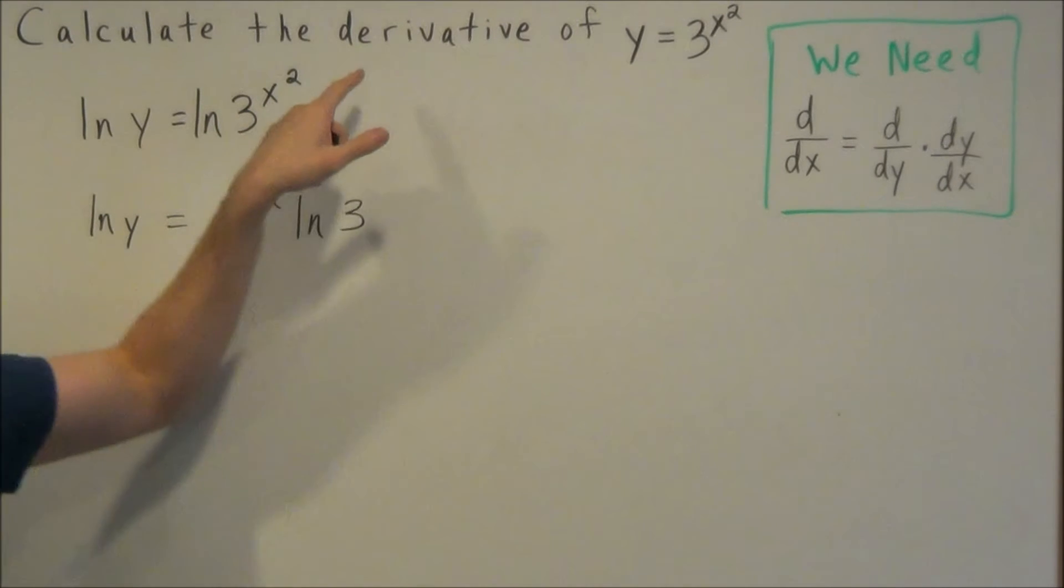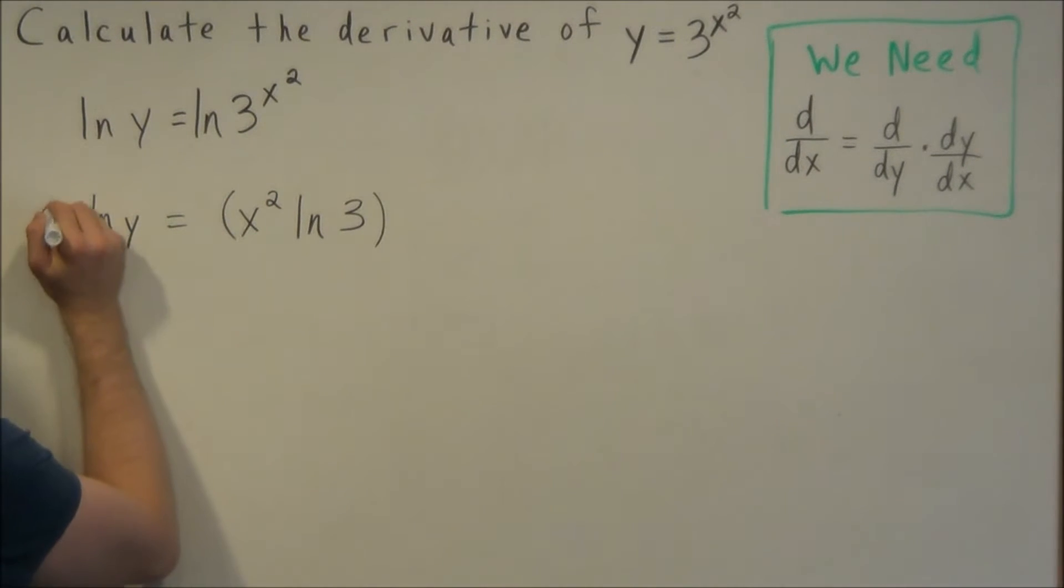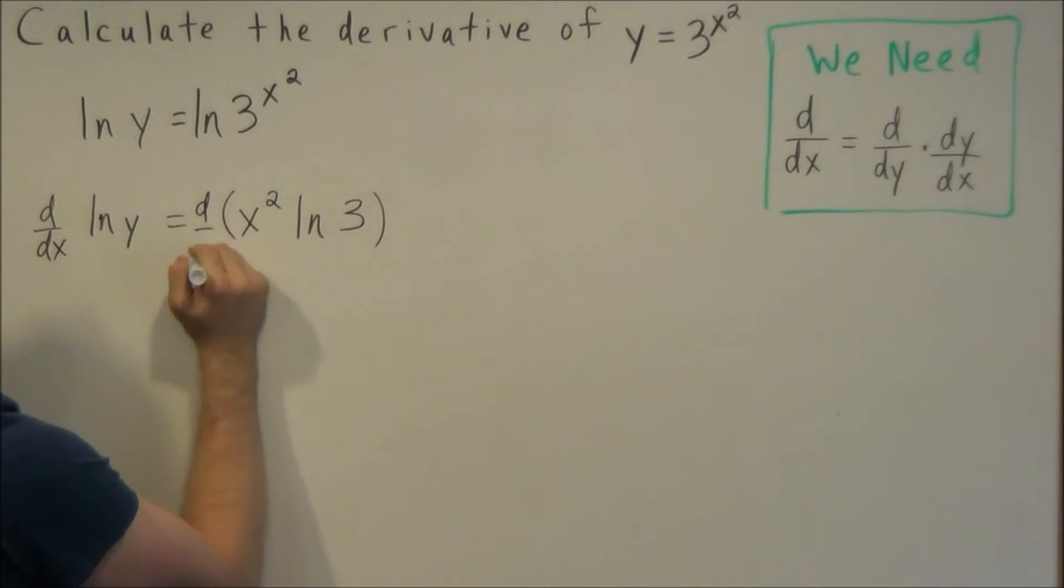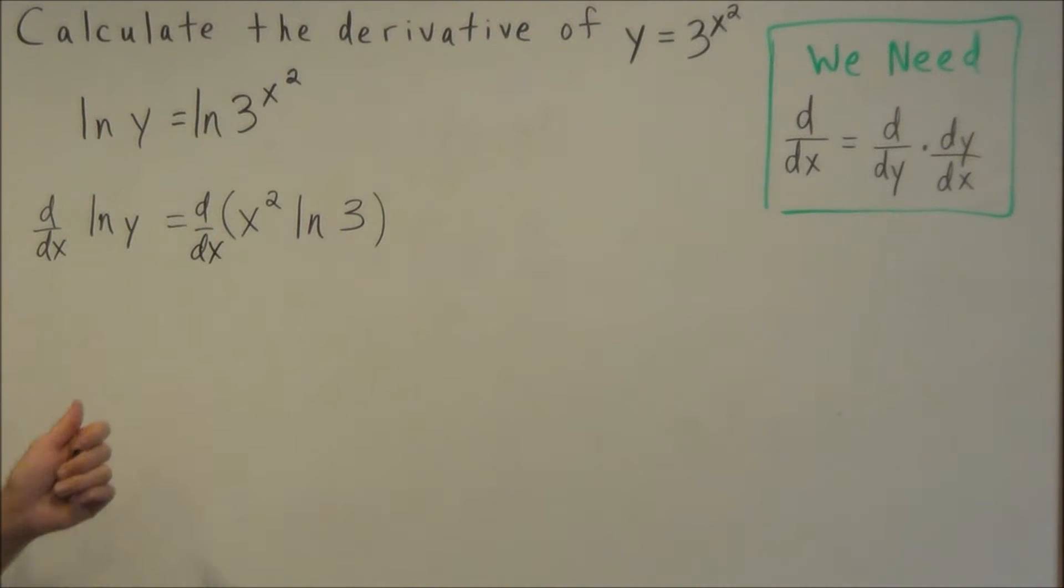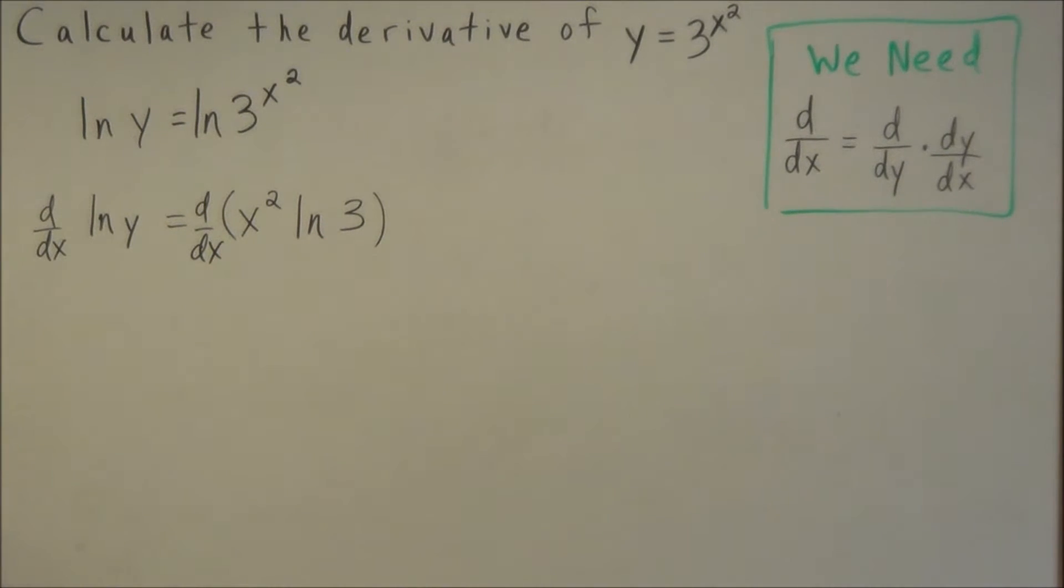So what we want to do now is calculate the derivative. So we're taking the derivative with respect to the variable x. So we'll notice right away that the right hand side, we have a constant times x squared. So that derivative, we could just have 2x times natural log 3.